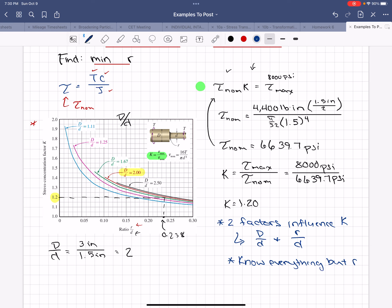So what we did is we used the figure with k and D over d to find that r over little d is approximately equal to 0.238.